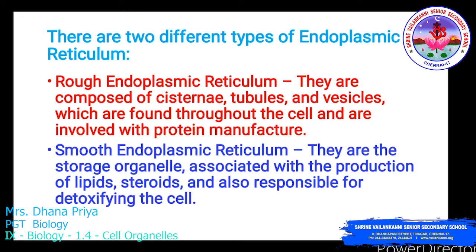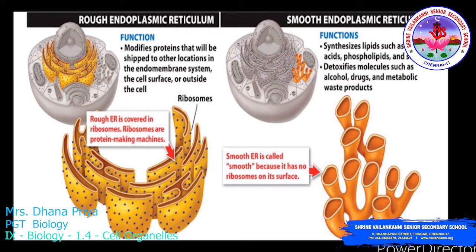There are two types of endoplasmic reticulum: rough endoplasmic reticulum and smooth endoplasmic reticulum. The rough endoplasmic reticulum has ribosomes present on its surface, making it rough in nature. Smooth endoplasmic reticulum lacks ribosomes, making it smooth in nature. Rough ER is composed of cisternae, tubules, and vesicles found throughout the cell and is involved with protein manufacture.